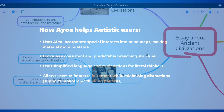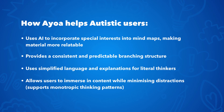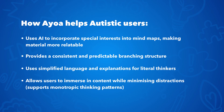Now let's see how AOS can help autistic users. It uses AI to incorporate special interests into mindmaps, making material more relatable. It provides a consistent and predictable branching structure. AOS also uses simplified language and explanations for literal thinkers, and it allows users to immerse in content while minimizing distractions, supporting monotropic thinking patterns.